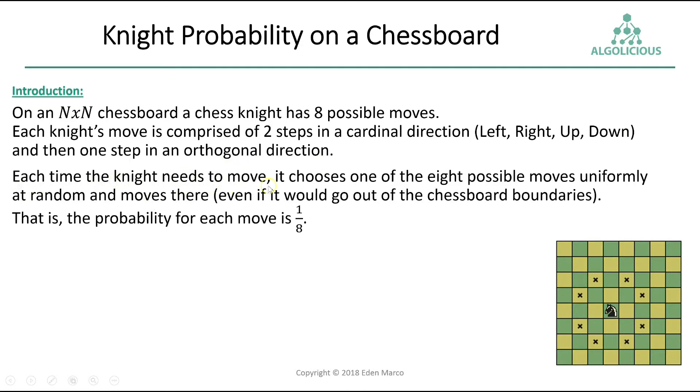Each time the knight needs to move, it chooses one of the eight possible moves uniformly at random and moves there, even if it would go out of the chessboard boundaries. That is, the probability for each move is one over eight.